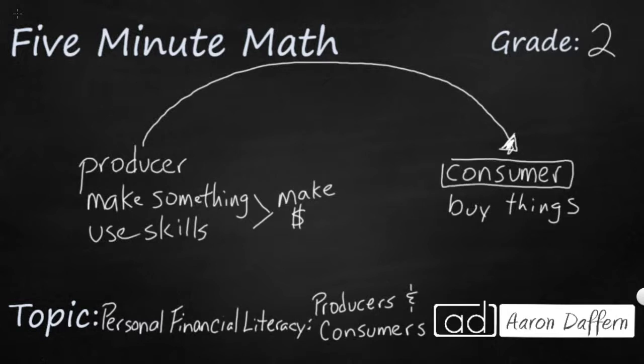But when you buy things, you actually buy those things from producers. So it's a big circle. It goes all the way back. The people who made those things that you buy, they get money, and then they go out and spend it on new things. And then you get more money, and you go out and spend it. It's this big circle. So you make money and you spend money, and you make money and you spend money.